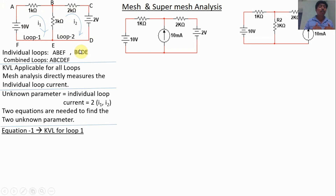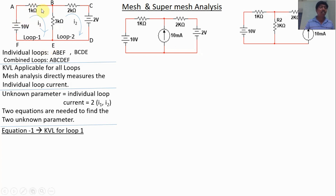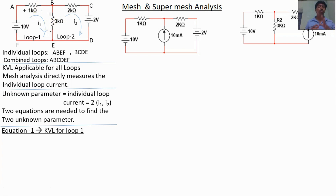For equation 1, we apply KVL for loop 1. If you don't know KVL, refer to the KVL concepts video linked in the description. To apply KVL, first mark the polarity on the resistors — the positive terminal should be in the direction of current flow. By Kirchhoff's Voltage Law, the algebraic sum of voltages around the loop is equal to zero.